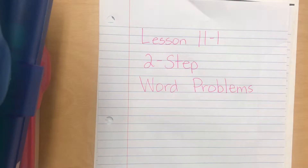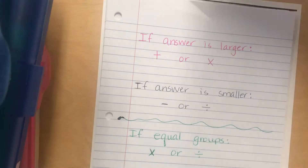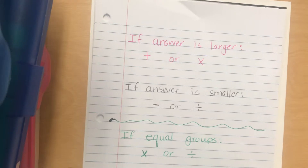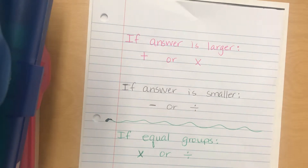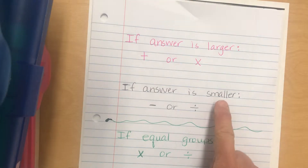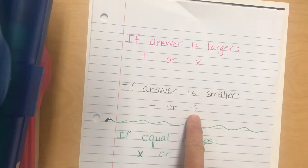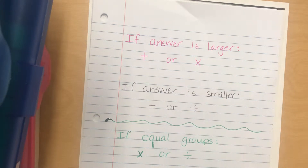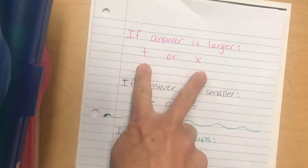We are going to do lesson 11-1, which is two-step word problems. The most important thing to remember about word problems is that we have some rules. If our answer is going to be bigger, we are either going to add or multiply those numbers together. If our answer is going to be smaller than the numbers we have, then we are either going to subtract or divide. First step: we ask ourselves, is our answer going to be larger or smaller?